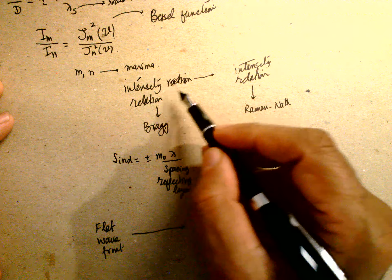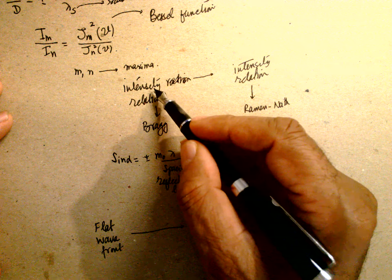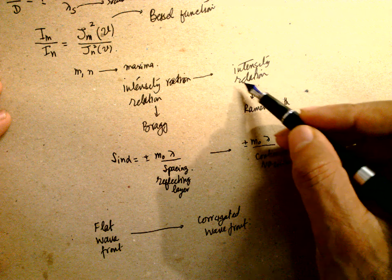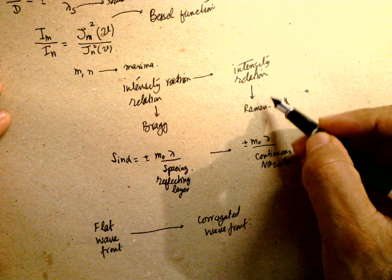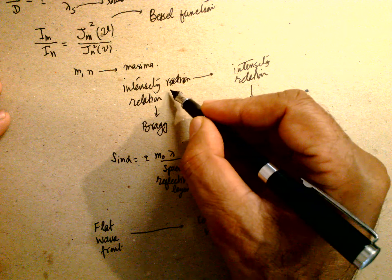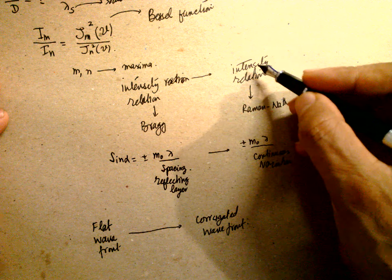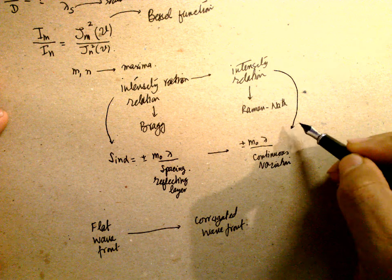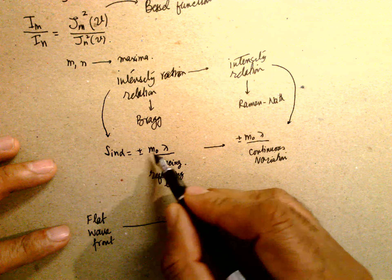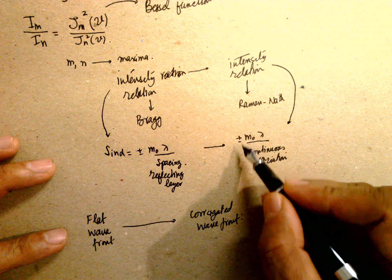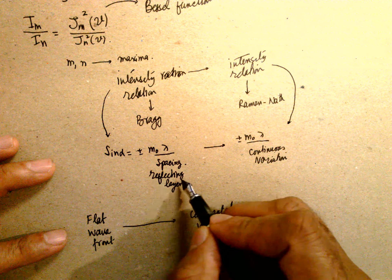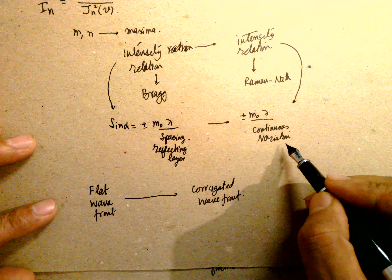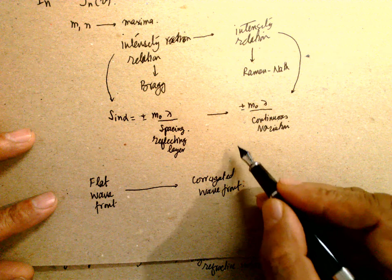The maxima m and L are defined from the intensity relationship. There are two regimes: Bragg's law and the Raman-Nath regime. In Bragg's case it involves only light, while in the Raman-Nath case it involves sound plus light. The grating spacing is ±m·λ₀/λ_s. Bragg diffraction uses reflecting layers, while Raman-Nath uses a continuous variation. Bragg gives a flat wavefront and Raman-Nath gives a corrugated wavefront.